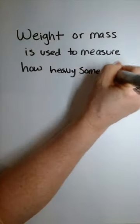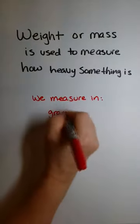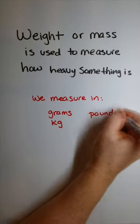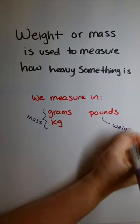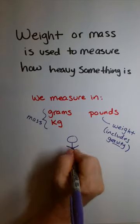Weight is how we measure how heavy something is. In the metric system, that is actually going to be mass, which is grams and kilograms. In the standard system, that's going to be pounds.